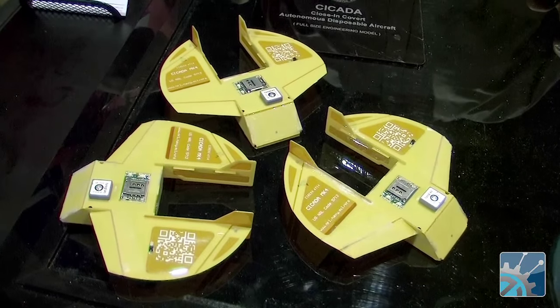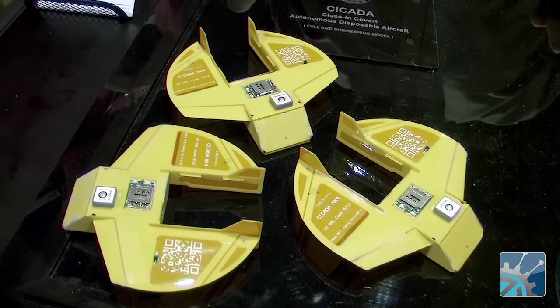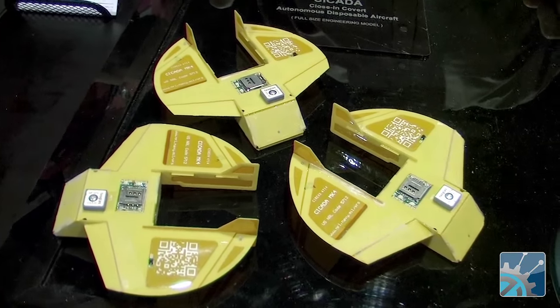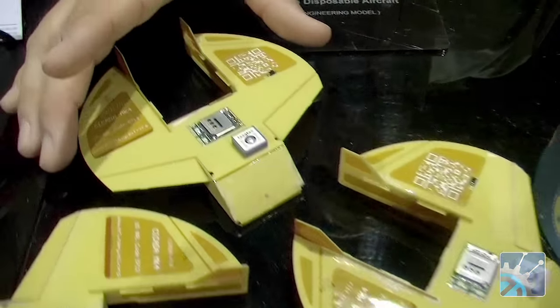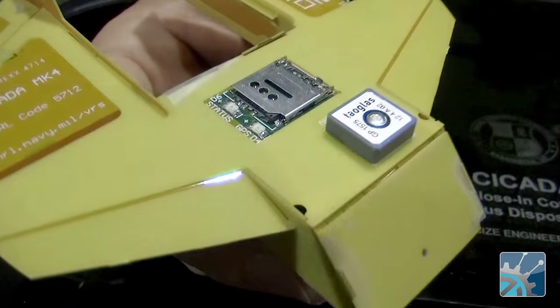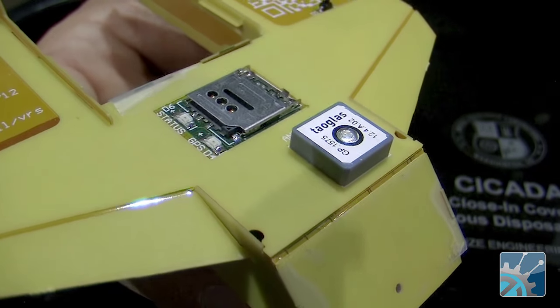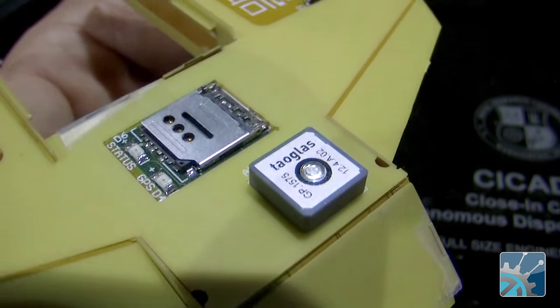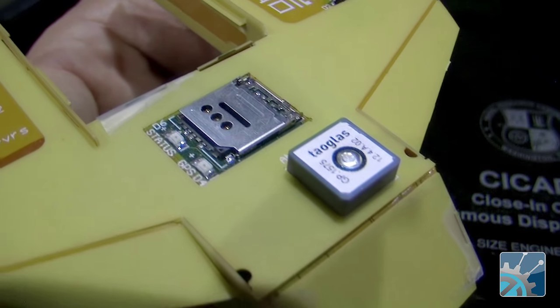So this is the Cicada Mark IV. This is the latest generation of the Cicada vehicle that we've developed in NRL. This one has a few extra features notable from the others. The biggest one is the addition of a cell phone modem. This one has the capability of taking the sensor data that has been collected once it has landed and send it back in the form of a text message.